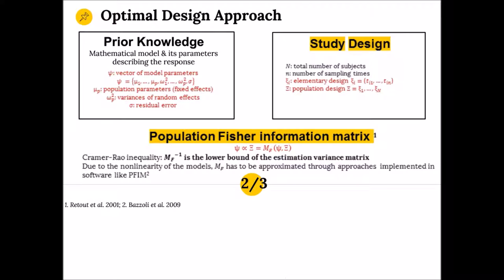What do you need to optimize your design? On one hand, you need to know the mathematical model and its parameters describing the response — the response being, for instance, the concentration over time, the PD measurement, or even both, in which case we use the terminology multi-response. On the other hand, you need to define the design variables, such as the number of subjects, the number of sampling times, and the design constraints, like the period during which you can make measurements. Then you can estimate the population Fisher information matrix with respect to your model and your design.